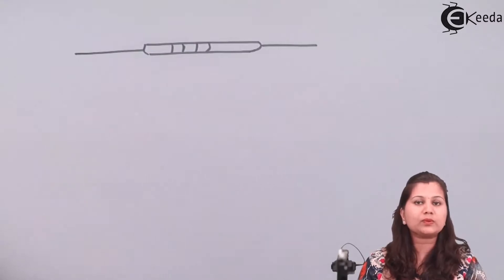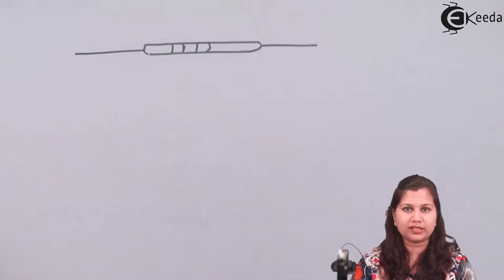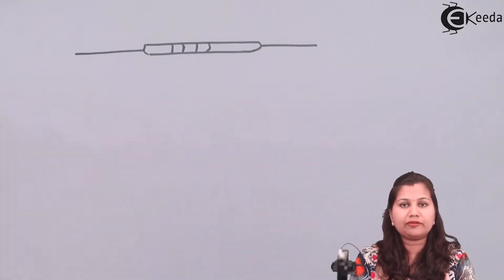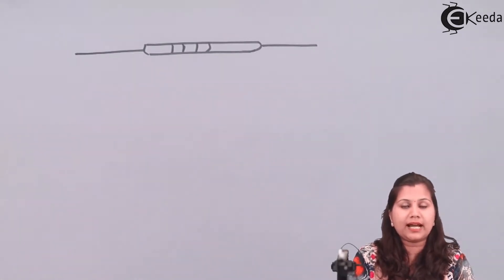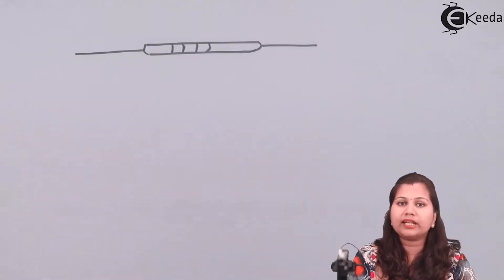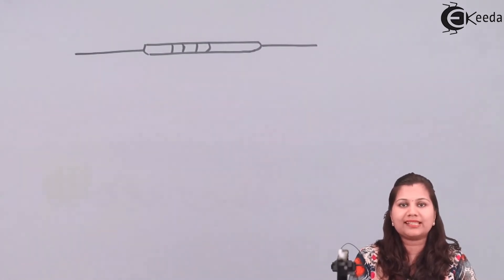To measure resistance we can use a multimeter — either analog or digital. In this video we studied what resistance is and how it is expressed. We saw the formulas: R equals V by I according to Ohm's law; R equals rho L by A expressed in terms of physical dimensions; and R2 equals R1 times (1 plus alpha T) when temperature is not constant. The unit of measurement of resistance is ohms. I hope the topic of what is a resistance is clear to you. Thank you.